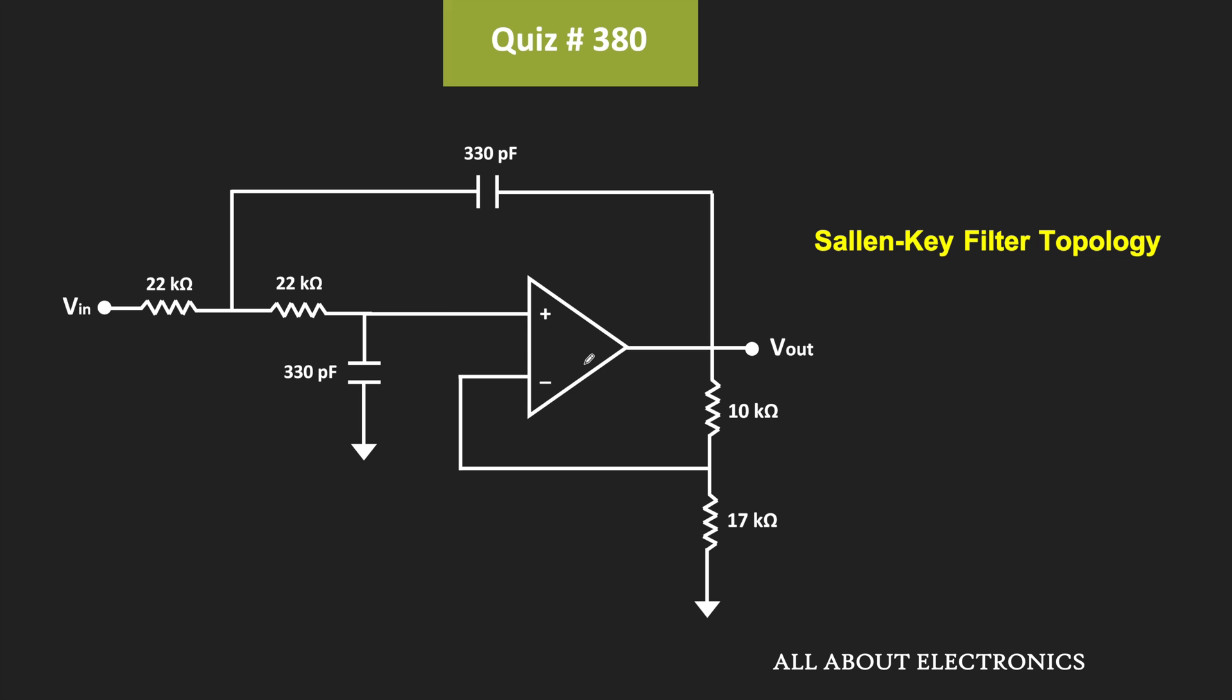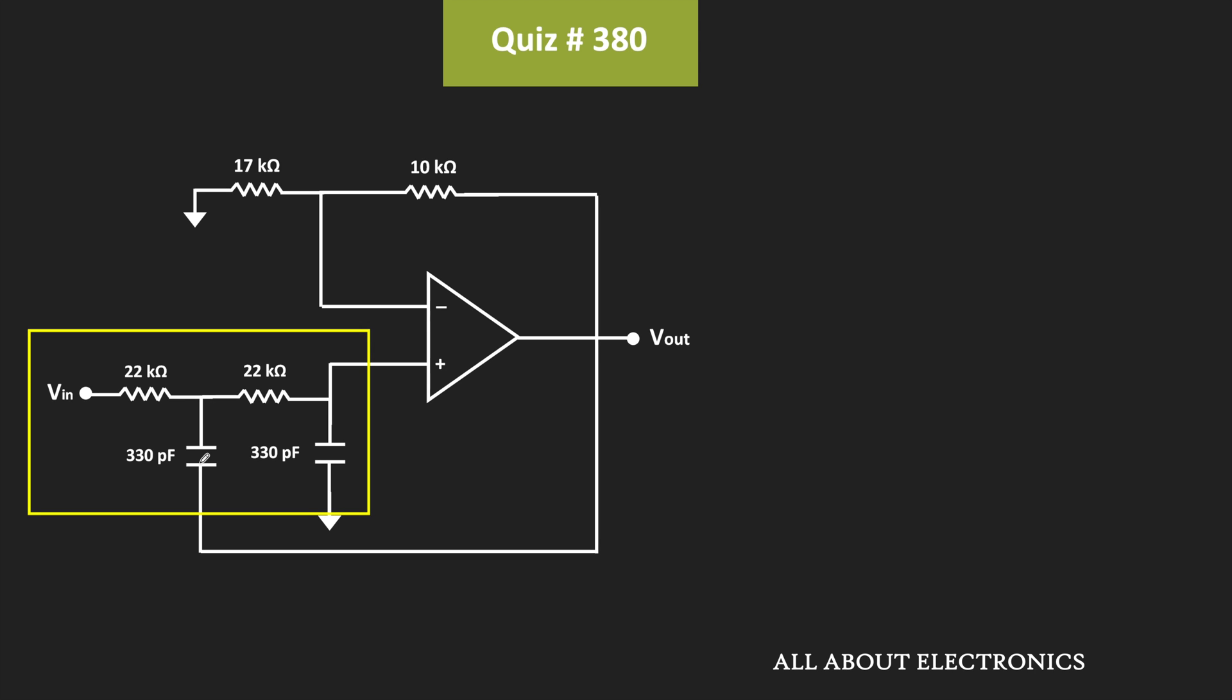Particularly, this is the second-order low-pass filter. Let me redraw the same circuit so that it will become clear to you. As you can see, this RC network forms the low-pass filter.